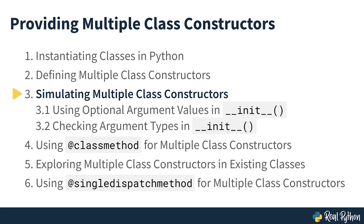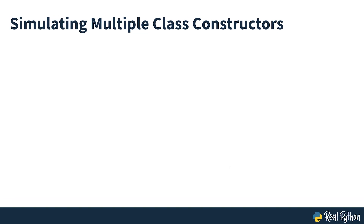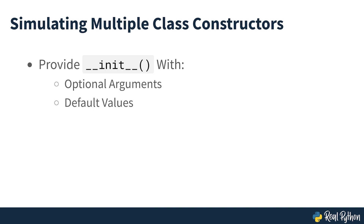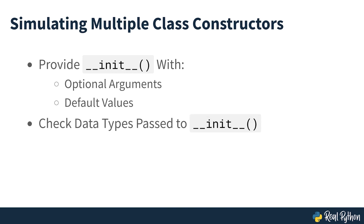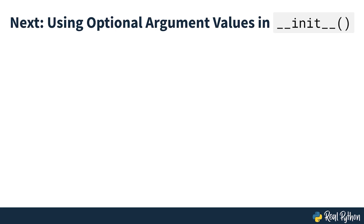Simulating multiple class constructors. A pretty useful technique for simulating multiple constructors in a Python class is to provide dunder init with optional arguments using default argument values. You can also check the data type of arguments to dunder init to provide different behaviors depending on the concrete data type passed in the call. Both approaches require only one implementation of dunder init, and you'll learn the basics of how to simulate multiple ways to construct objects using these techniques.